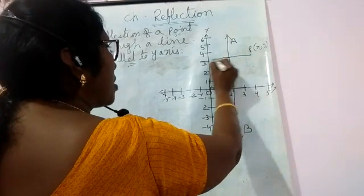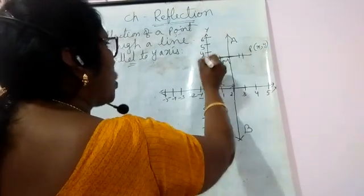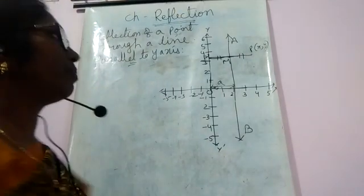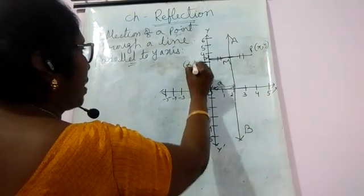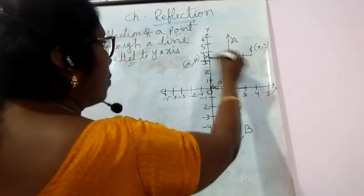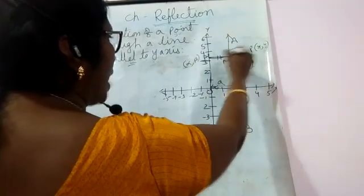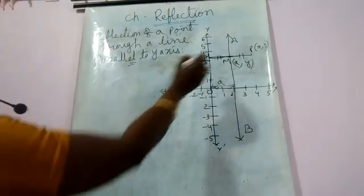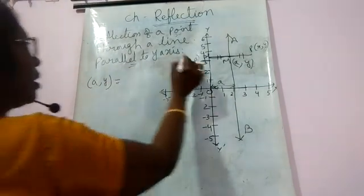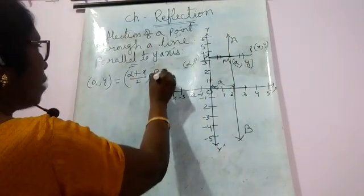Draw perpendicular PM to AB and produce it up to P' such that PM = P'M. Let us take the coordinates of P' as (alpha, beta). The coordinates of M are (a, y) — the x-coordinate is a and the y-coordinate is the same as P, since M and P are on the same horizontal line. Now M acts as the midpoint of PP'. So the coordinates of M are: a = (alpha + x)/2 and y = (beta + y)/2.